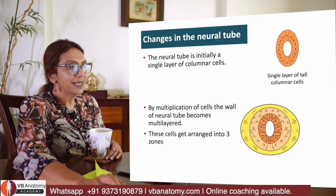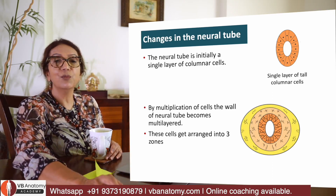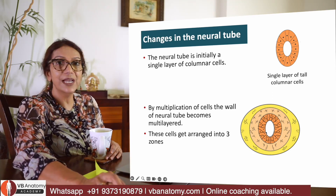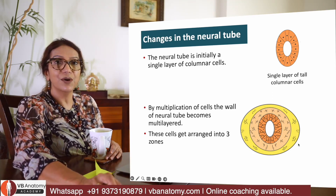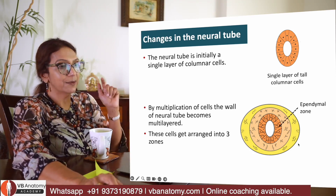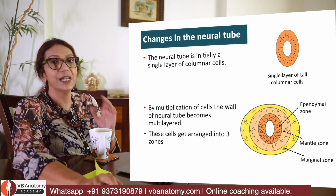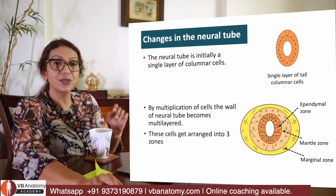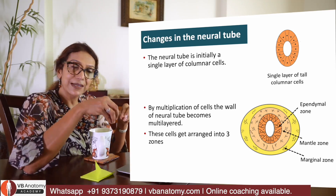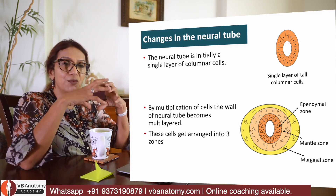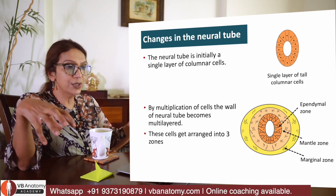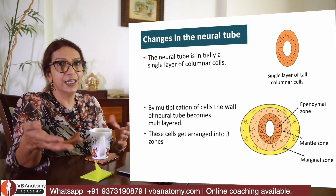Finally, from one layer there are three layers formed. You can see one original layer and two more layers found outside that. These layers are called the ependymal layer, the mantle layer, and the marginal layer — marginal being the one most outside.